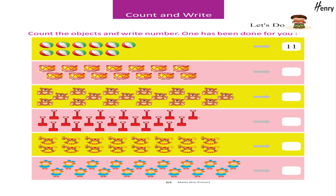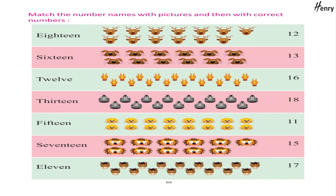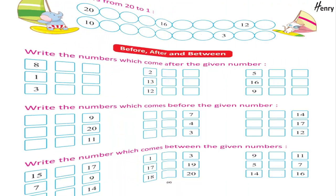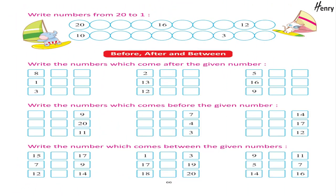Let's do — count the objects and write numbers; one has been done for you. Match the number names with pictures and then with correct numbers. Write numbers from 20 to 1. Before, After, and Between: write the numbers which come after the given number; write the numbers which come before the given number; write the numbers which come between the given numbers. Arrange in increasing order. Arrange in decreasing order.